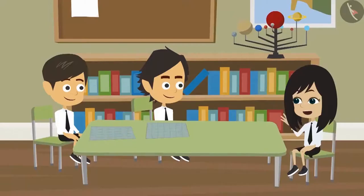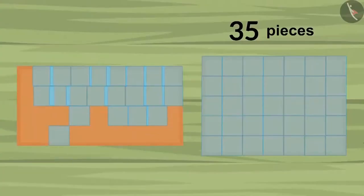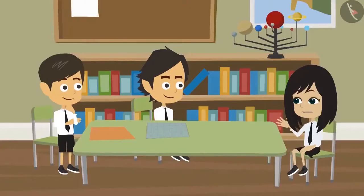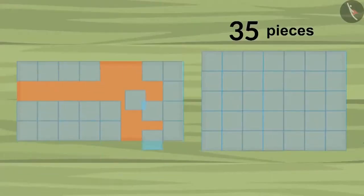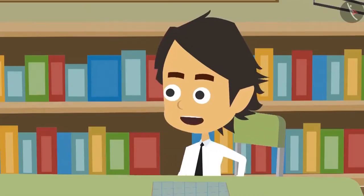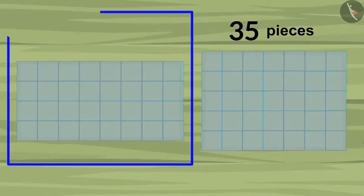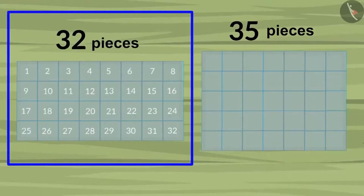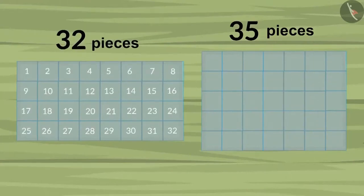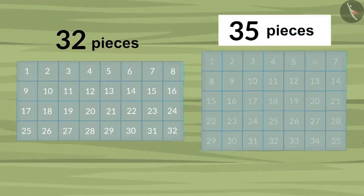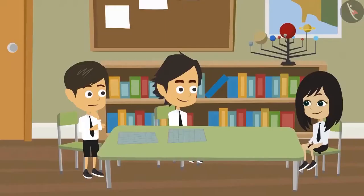Okay, so what should I do now? Now remove all these pieces and measure again. This time, don't place the pieces on top of each other. Now the pieces are placed correctly. Now you can tell the correct measurement. 32 pieces were required to cover my cardboard, whereas 35 pieces were required to cover Ayushman's cardboard. This means that my cardboard is small.